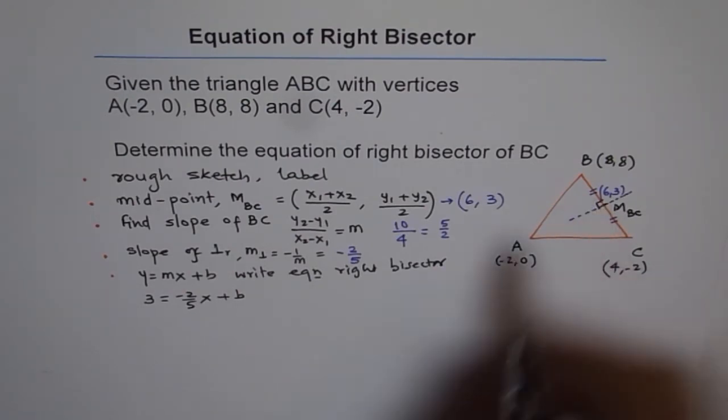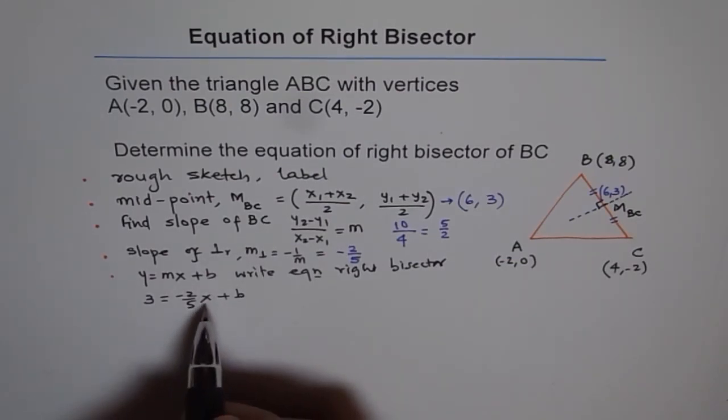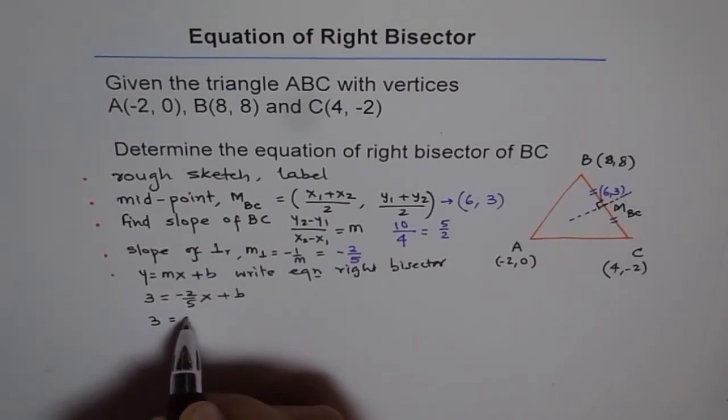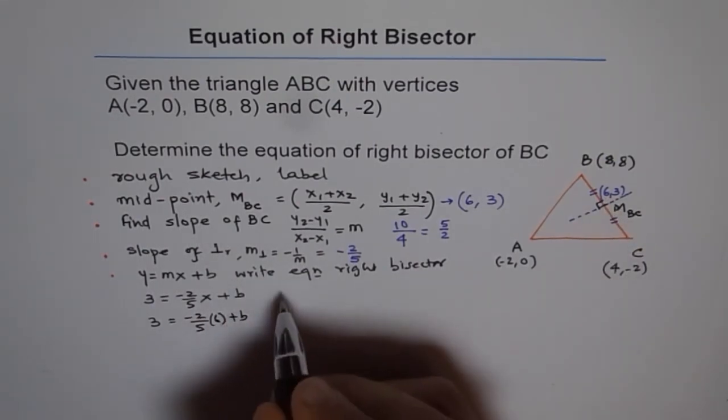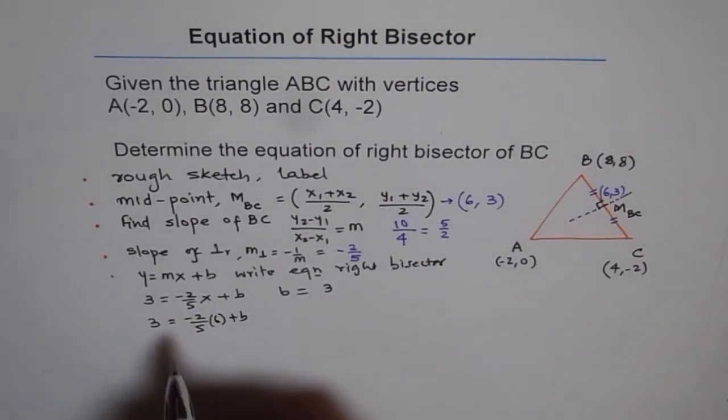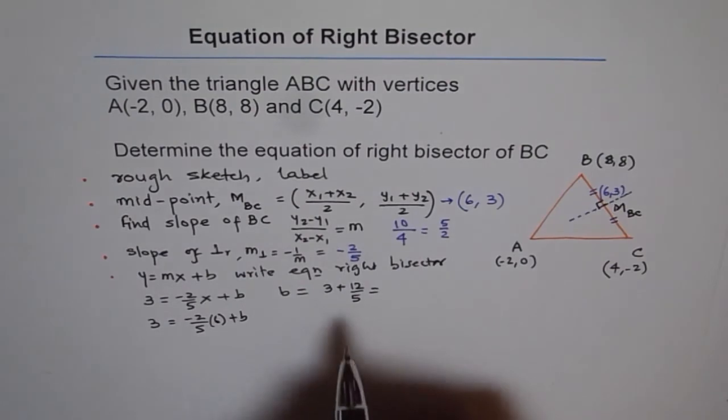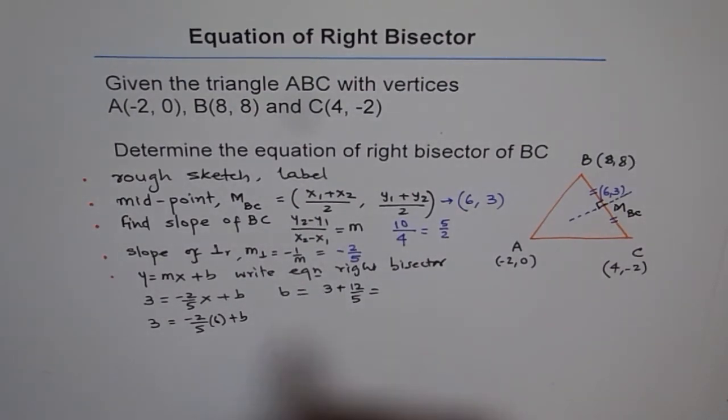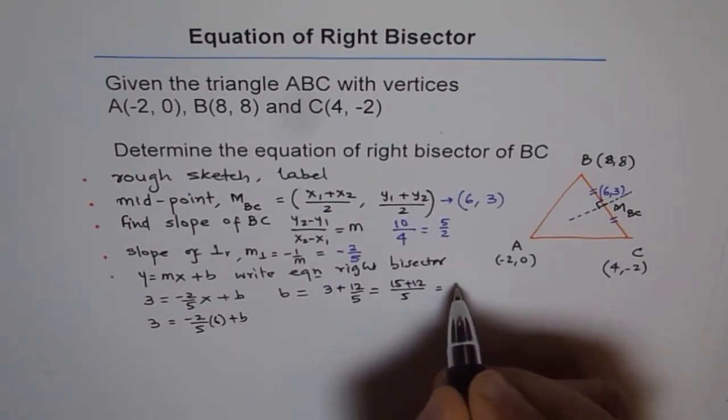So we don't know what b is. So what we will do is, we will try to find b now. So for b, we will plug in the value of x, which is 3 equals to -2 over 5, x value is 6 times 6 plus b. And we will calculate b from here. We say b equals to, when we take this on the other side, we get 3 minus becomes plus, 6 times 2 is 12, 12 over 5. Now to add that up, 5 times 3 is 15. So we get 15 plus 12 over 5, which is 27 over 5.